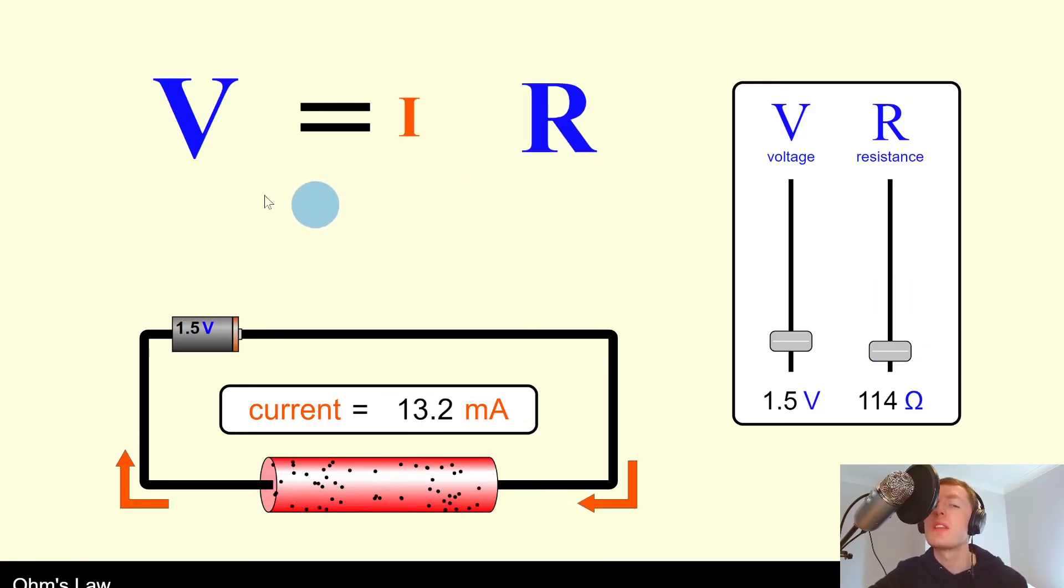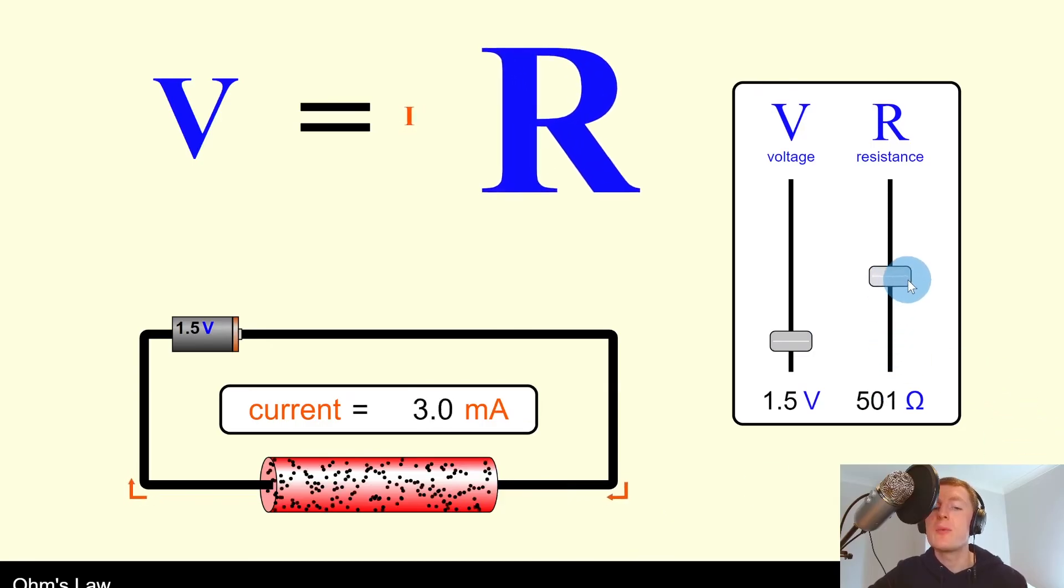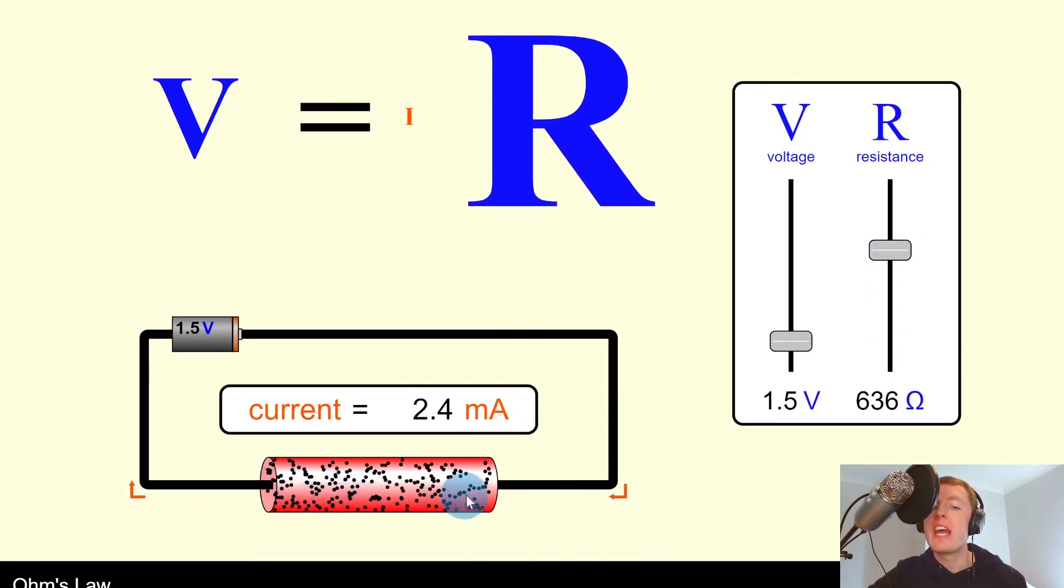Remember in this equation, that's assuming that voltage is staying constant and our current and resistance can change because they are opposites. Another thing to point out is that as I increase the resistance, you can see more and more black dots appearing in the resistor here. These are representing the electrons that are being stopped inside the resistor.